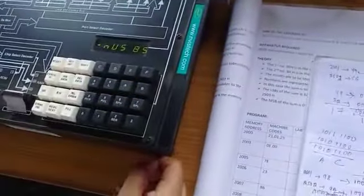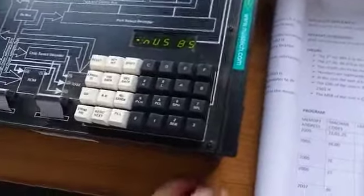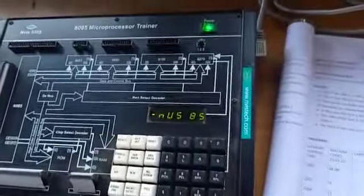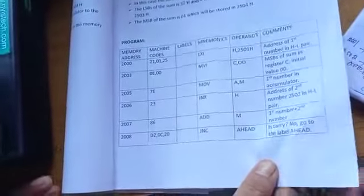So we have to perform this in the kit, that is the 8085 trainer kit. This is the program for two 8-bit numbers and sum is 16-bit. Now perform in the kit.